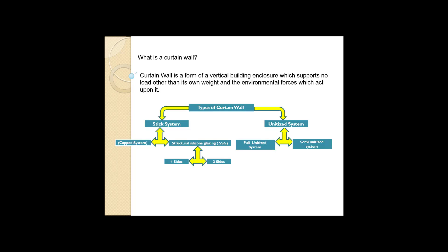Today we are going to talk about curtain wall fabrication. First, what is a curtain wall? The curtain wall is a form of vertical building closure which supports no load other than its own weight and the environmental forces acting upon it. There are two main types: stick curtain wall and unitized system.